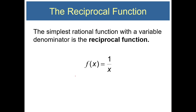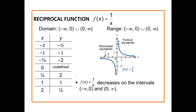The simplest rational function with a variable denominator is the reciprocal function, f of x equals 1 over x. The reciprocal function has a vertical asymptote in the middle as well as a horizontal asymptote. A good way to create the graph of the reciprocal function is to create a table.